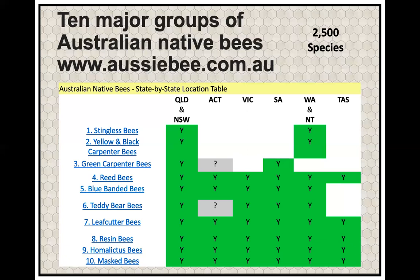The list below shows the 10 major groups of Australian native bees. As you can see, there are some we don't get here in Victoria — mainly because it's too cold. The stingless bee, which actually does make honey, makes about a kilo of honey a year and lives further north where it's warmer.